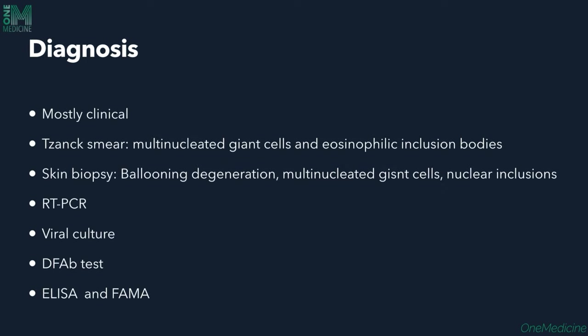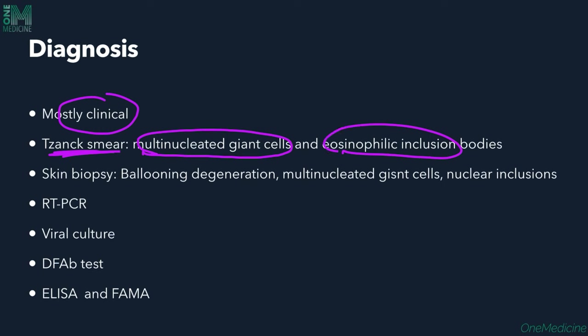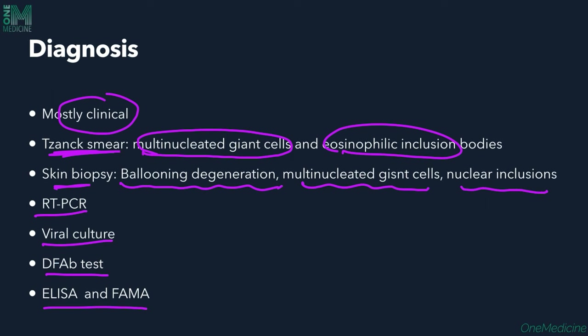Diagnosis is primarily clinical, based on lesion appearance. Tzanck smear can be done, showing multinucleated giant cells and eosinophilic inclusion bodies. Skin biopsy shows ballooning degeneration, multinucleated giant cells, and nuclear inclusions. RT-PCR, viral culture, direct fluorescent antibody test, ELISA, and FAMA can also be done for diagnosis of Varicella.